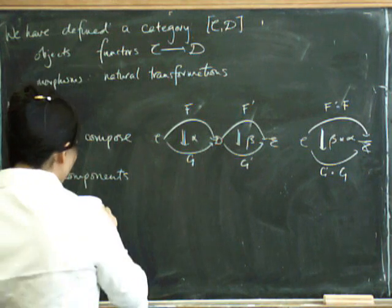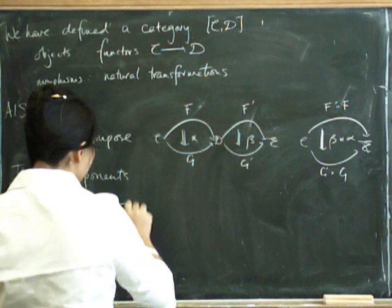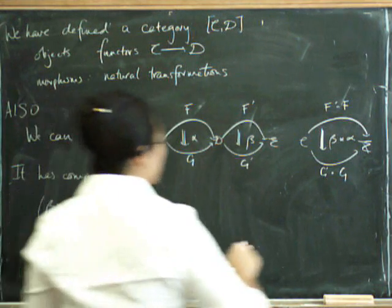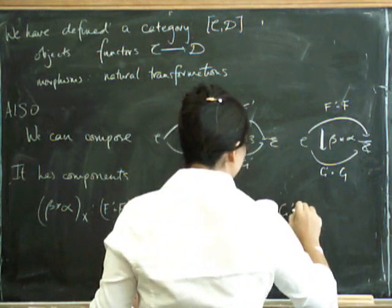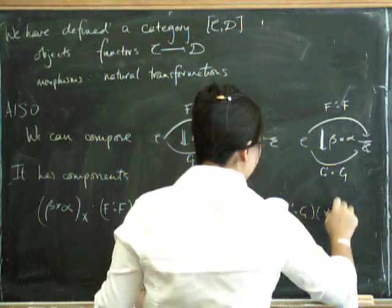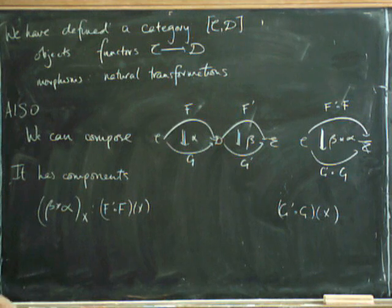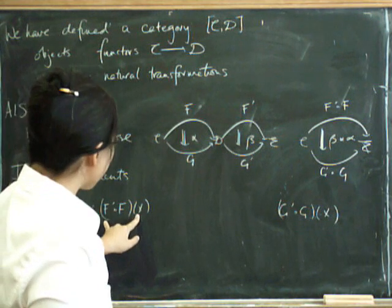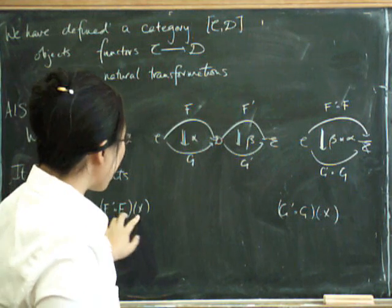It has to go from F prime of F of X to G prime of G of X. Now, let's think about this. F prime of F of X is just F prime of F of X.